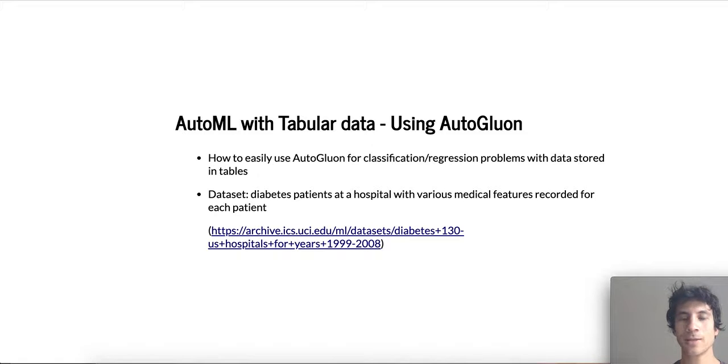Hi, welcome to our first hands-on tutorial. In this tutorial, we're going to cover AutoML with tabular data, which is arguably the most common data type encountered in machine learning today. We're going to show you how easily you can use AutoGluon for classification and regression problems with data stored in tables, where the goal is to predict one column of values based on the values measured in the other columns.